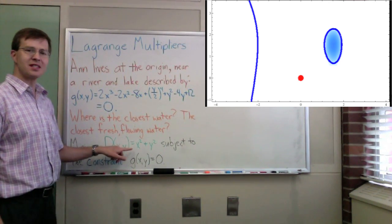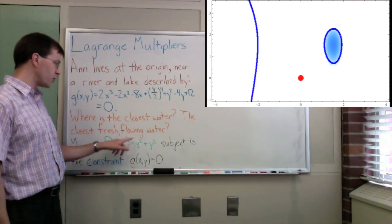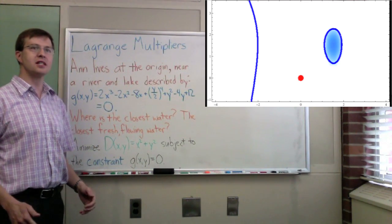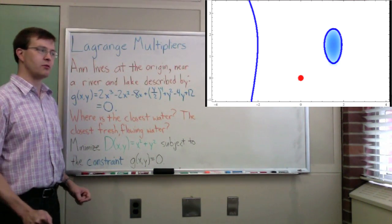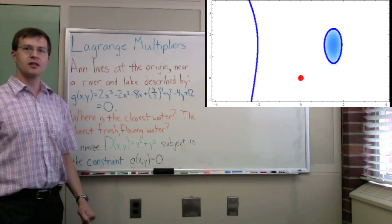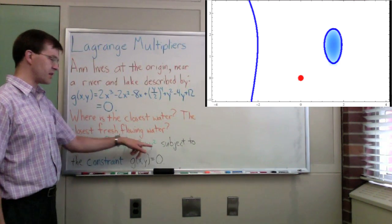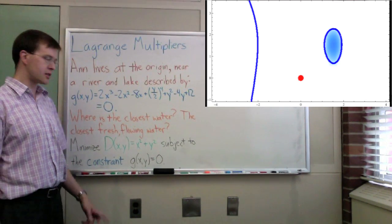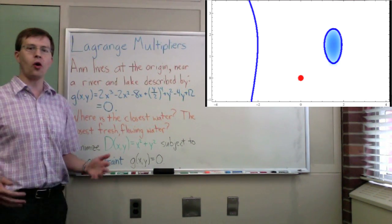And when I say minimize the distance, technically the distance is the square root of this function capital D that I've written down. But because distance is never negative, it turns out that minimizing capital D is equivalent to minimizing the actual distance. So we're happy. This is an easier thing to deal with. No messy square roots. You can minimize it with the square roots if you wanted, but yuck. So this is just as good. So that's our goal.